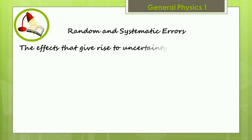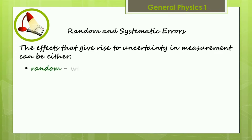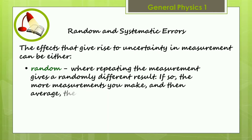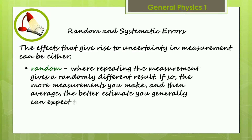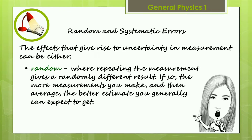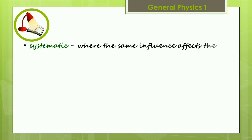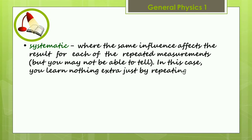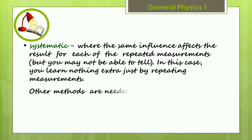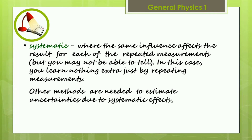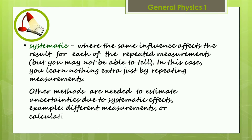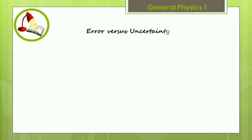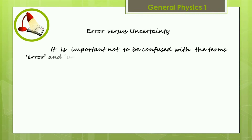The effects that give rise to uncertainty in measurement can be either random or systematic. It is important not to be confused with the terms error and uncertainty.